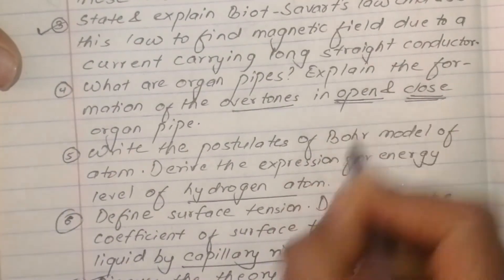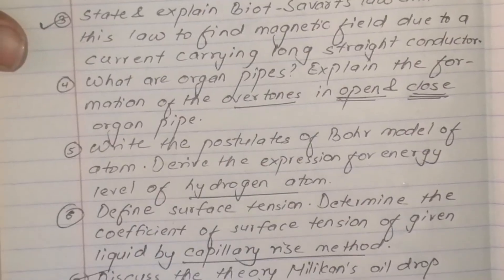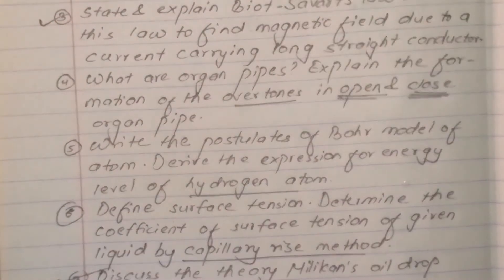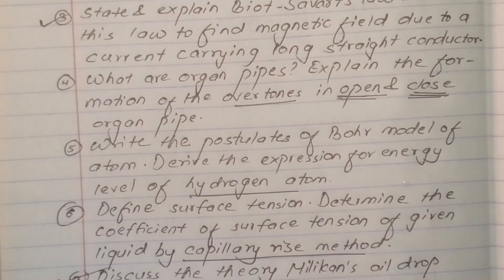Derive an expression for electric potential due to the point charge. Explain the formation of overtones in closed organ pipe. It is a long question, short question.